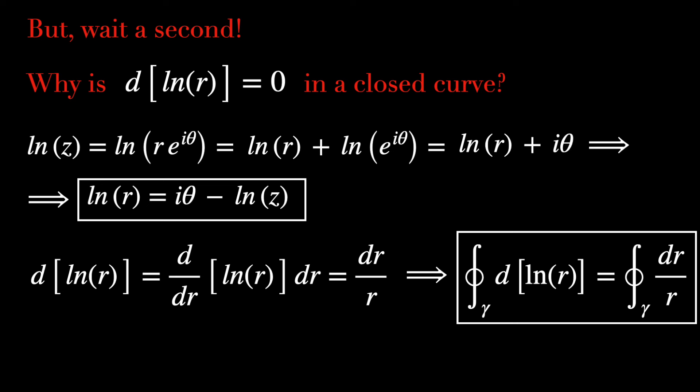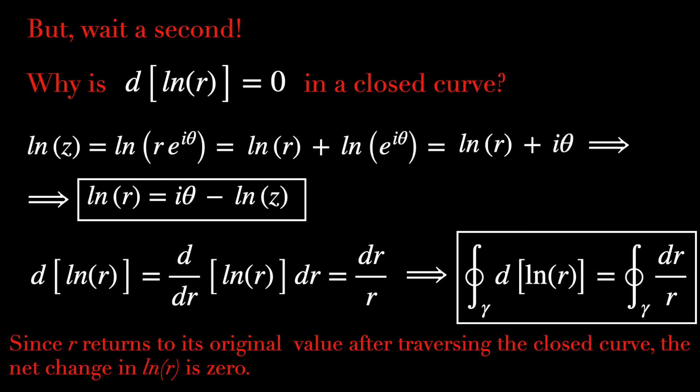So differentiating now, we would get dr/r. And when gamma is a closed curve and we take the line integral over this closed curve of d(ln r), it is the same thing as taking this integral of dr/r. And since r returns to its original value after traversing the closed curve, the net change in ln(r) is 0. Okay, so I hope you're convinced now.